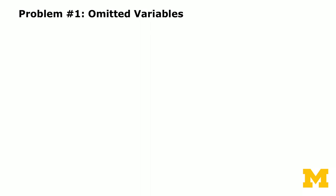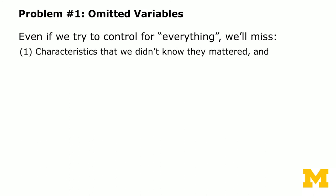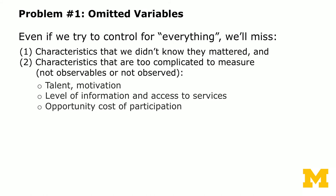Let's look at the omitted variable bias first. Even if we try to control for everything, we'll miss characteristics we don't know matter and characteristics that are too complicated to measure. These could include talent and motivation — people who are more motivated are more likely to participate, but we can't observe that. The level of information and access to services might differ, and the opportunity cost of participation might also differ, for example for someone with young children at home.